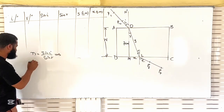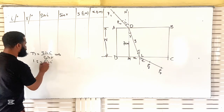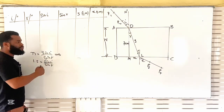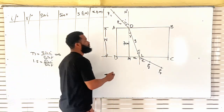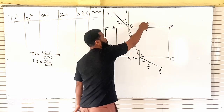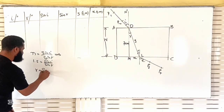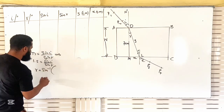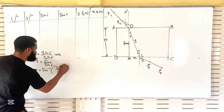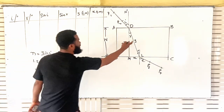This implies that refractive index 1.5 is equal to sine of the incident angle all over sine of the refracted angle. 1.5 is the refractive index of the glass when light is coming from air into the glass. So this means that R is equal to sine inverse of sine I all over 1.5. I'm going to use this to find my R.